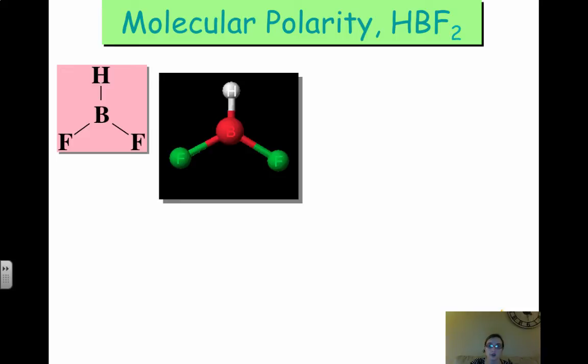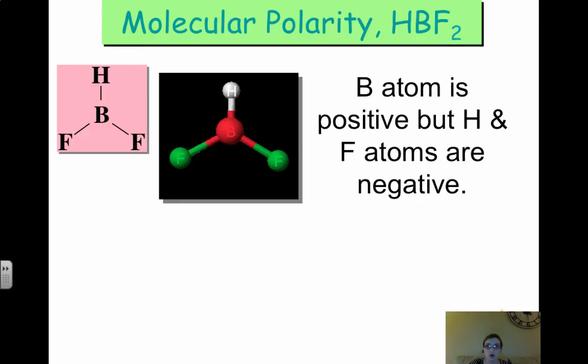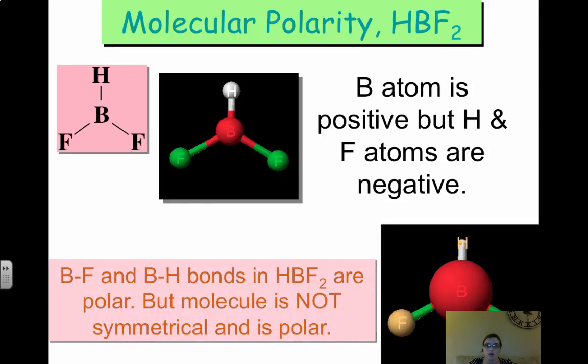Then we look at HBF2. We have the boron atom that's positive, our F atoms are negative, but it is not symmetric. Now you might say, I can draw a line right down here through the center, and that'll flip over, left flips over onto the right. Well, what if I draw it this way? You have to be able to draw your line any way through one of the bonds in order to determine polarity. So because if I drew my line here, hydrogen will not flip onto fluorine. So this is not symmetric, which makes this polar.